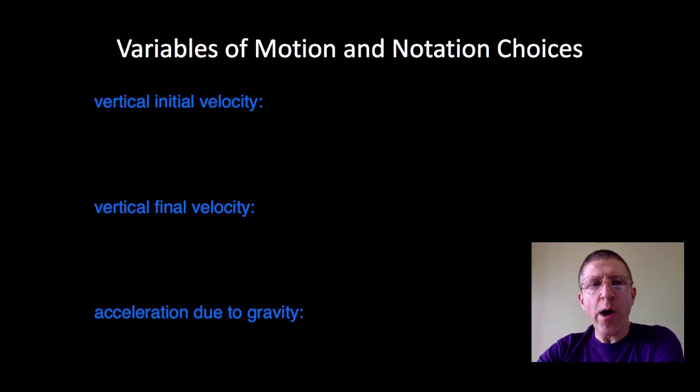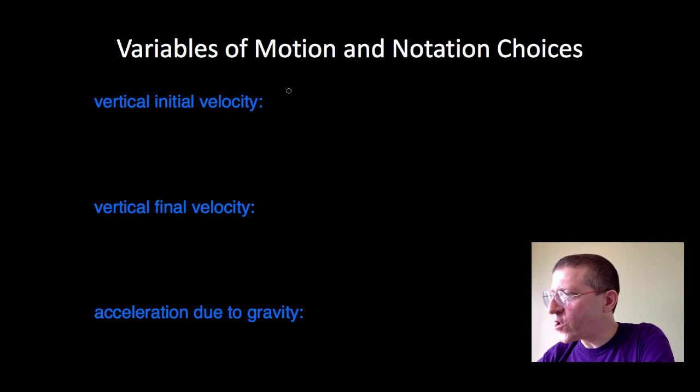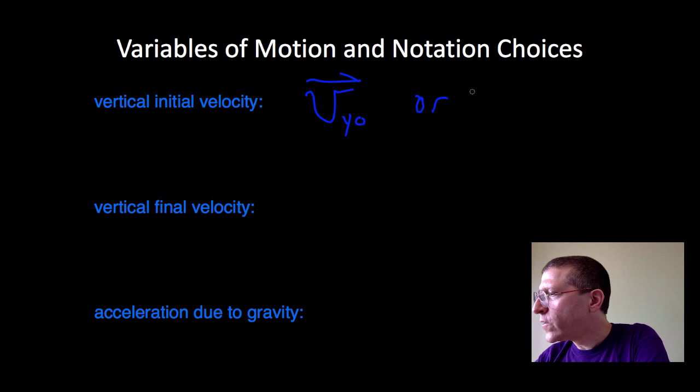So what would we do if we wanted to express vertical initial velocity symbolically? Well, vertical is the Y direction. So our velocity symbol is V—and I will be explicit with the vector here—V in the Y direction, naught, meaning initial. Or you could, if you prefer, do V sub Y sub initial.